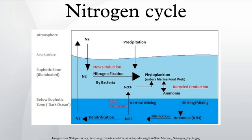Denitrification is the reduction of nitrates back into the largely inert nitrogen gas, completing the nitrogen cycle. This process is performed by bacterial species such as Pseudomonas and Clostridium in anaerobic conditions. They use the nitrate as an electron acceptor in the place of oxygen during respiration. These facultatively anaerobic bacteria can also live in aerobic conditions. Denitrification happens in anaerobic conditions such as waterlogged soils, where the denitrifying bacteria use nitrates in the soil to carry out respiration and consequently produce nitrogen gas, which is inert and unavailable to plants.